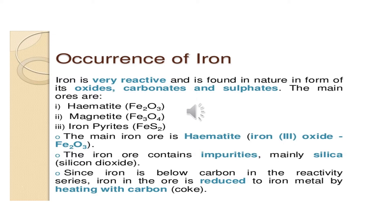Now we are going to see the occurrence of iron. Iron is very reactive and it is found in nature in the form of oxides, carbonates, and sulfides. The main important ore is hematite, that is Fe2O3. Next is magnetite, its formula is Fe3O4. How to remember magnetite? Because iron shows magnetic property, so magnetite is Fe3O4. Next is iron pyrites Fe2O3, and siderite Fe3O3. The main important ore is hematite, its formula is Fe2O3.